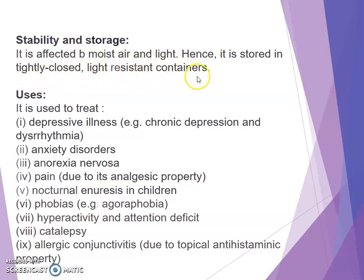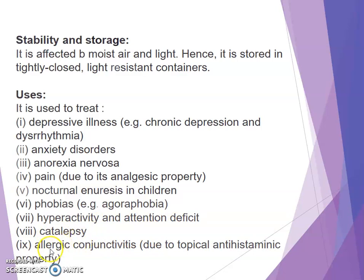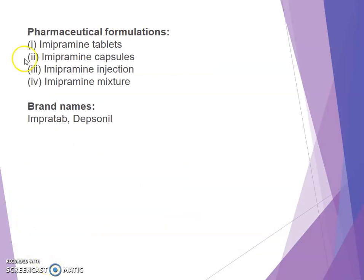Stability and storage: imipramine is affected by moisture, moist heat, and air; therefore it should be stored in a tightly closed, light-resistant container. Uses: it is used to treat depressive illness such as chronic depression and dysthymia, anxiety disorders, anorexia nervosa, pain due to its analgesic property, nocturnal enuresis in children, phobias, and hyperactivity and attention deficit.